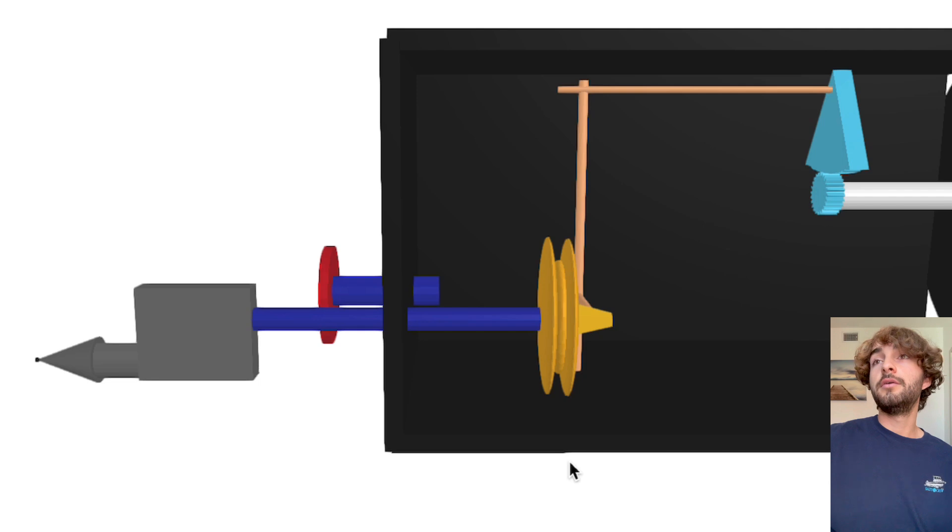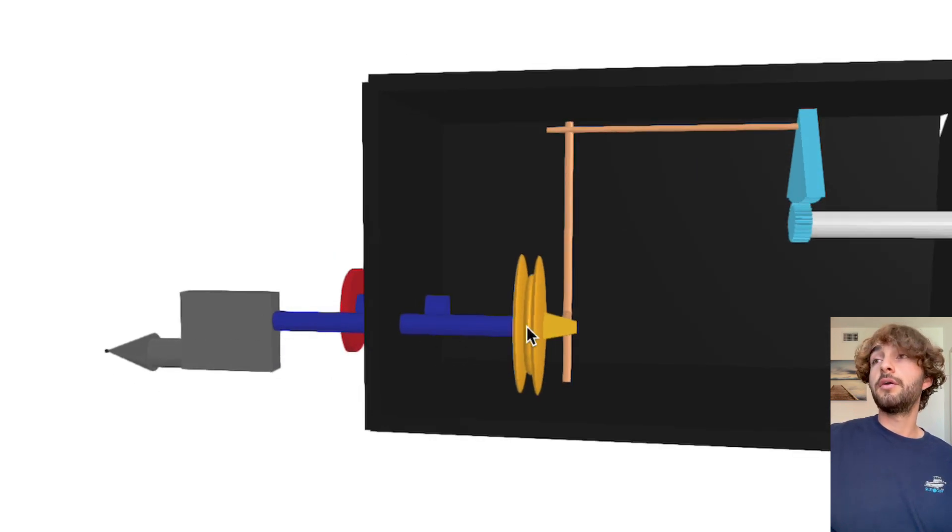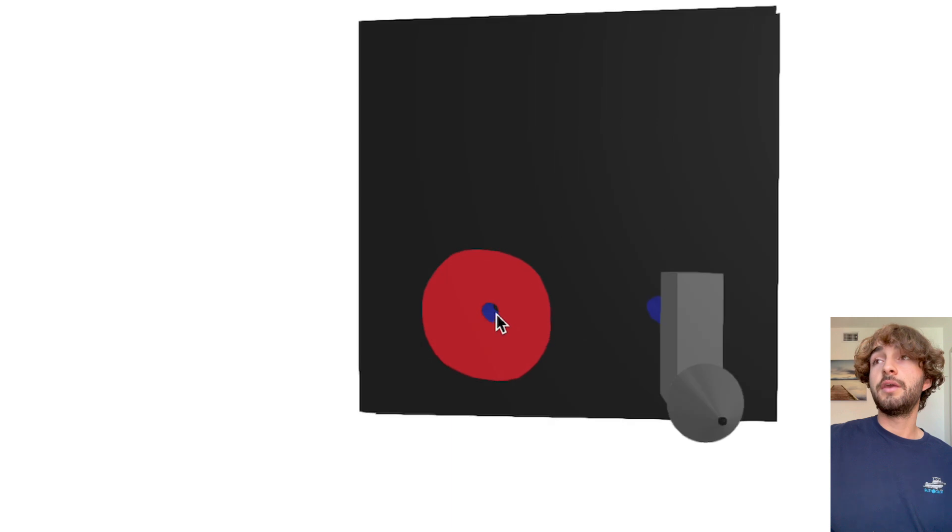As you could see, the pitot tube, the air that's going to flow through that is directly connected to the diaphragm and the static port, all the air that's flowing through that is going to flow into the casing.